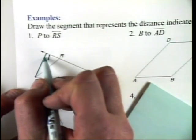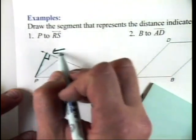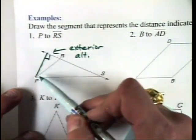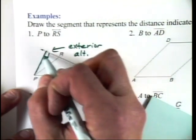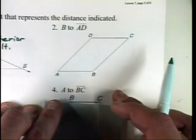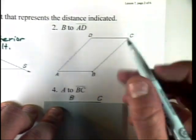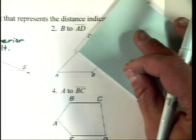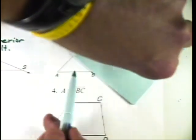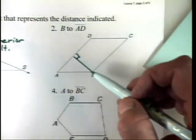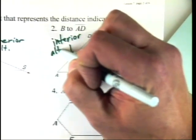Then draw the line along the edge. When you pull it away, you've created this little line segment. This is called an exterior altitude, because I had to draw it on the outside of my triangle — but it is perpendicular to the side opposite. Now we have a parallelogram. We want to draw the perpendicular line from point B to segment AD. I line my post-it pad up along that line and slide it down until I hit point B, then draw that line. That would be the interior altitude, because it's inside the shape.